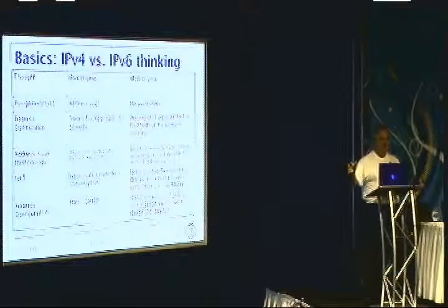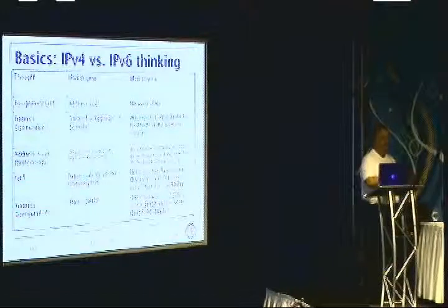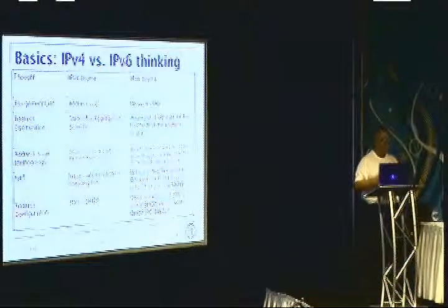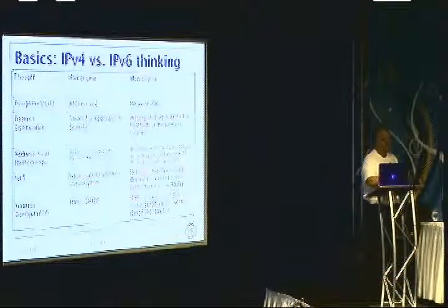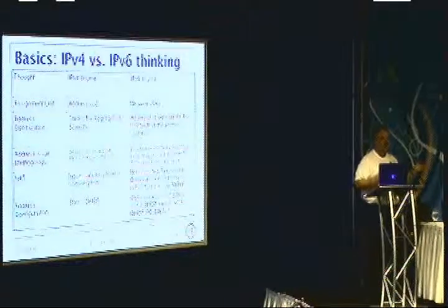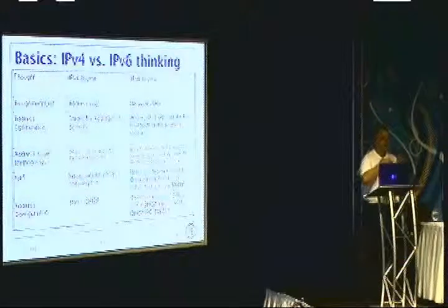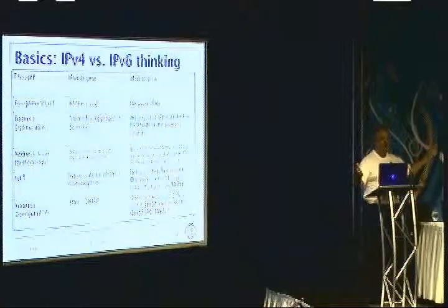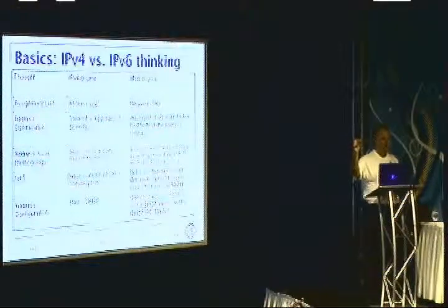A lot of people ask me: isn't that really, really wasteful? Shouldn't we use something smaller for point-to-point links with only two hosts? My answer is: even if you use 200 addresses on an IPv6 /64, you still have 18 quintillion addresses that you're wasting. So the difference between two hosts, 200 hosts, and 2,000 hosts in a /64 is still in the noise — it's in the rounding error above 18 quintillion.